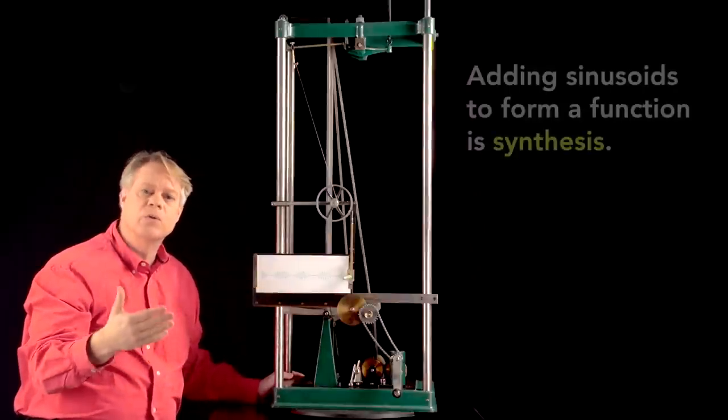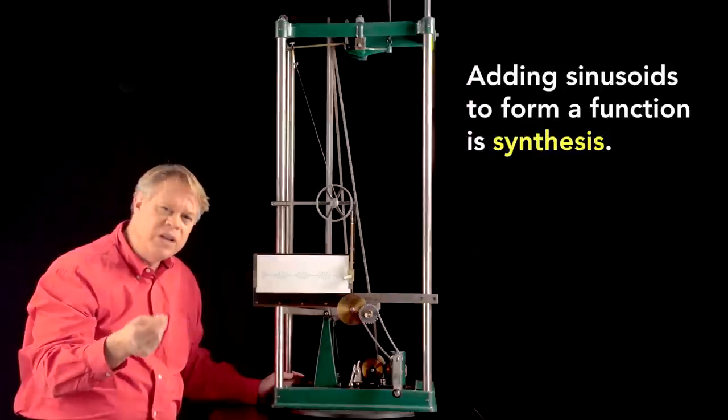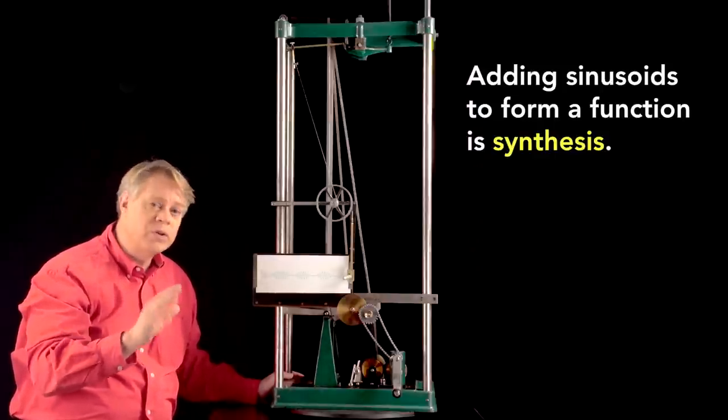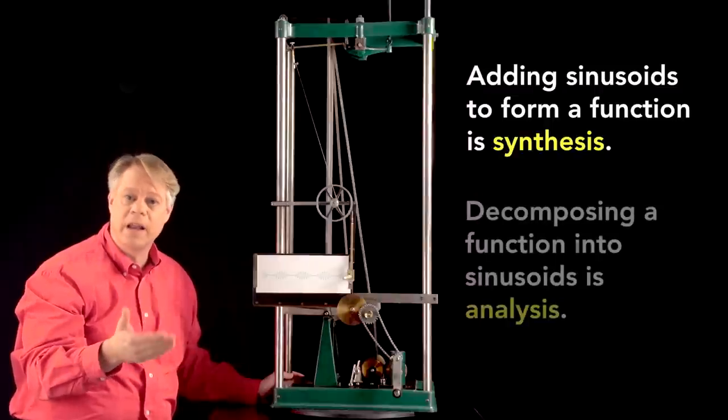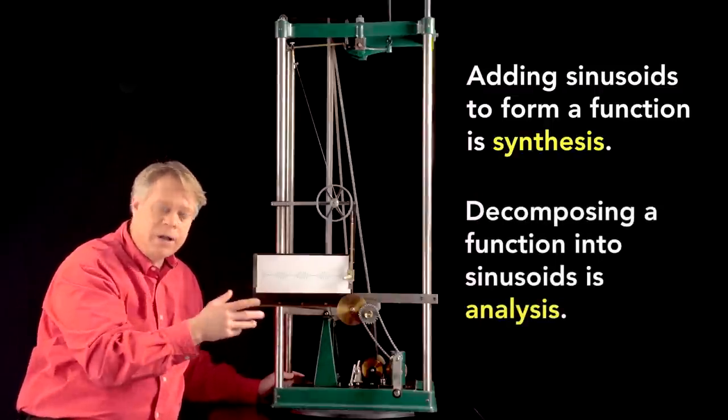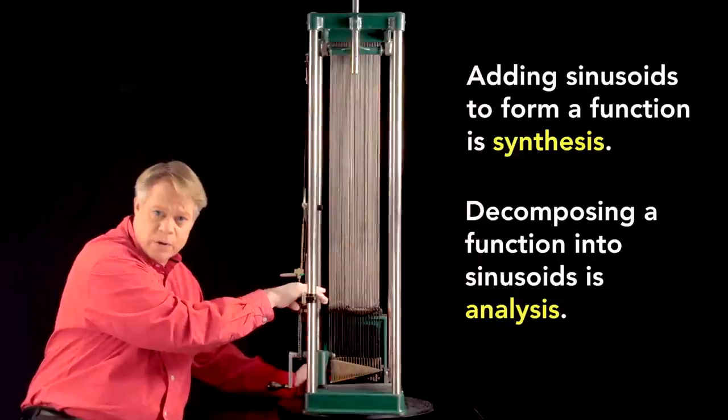This process is called synthesis. But this machine is called a harmonic analyzer, which means it can be used to solve the much more difficult inverse problem called analysis. For example, if I want to plot a particular function here, how do I set the amplitude bars to produce it?